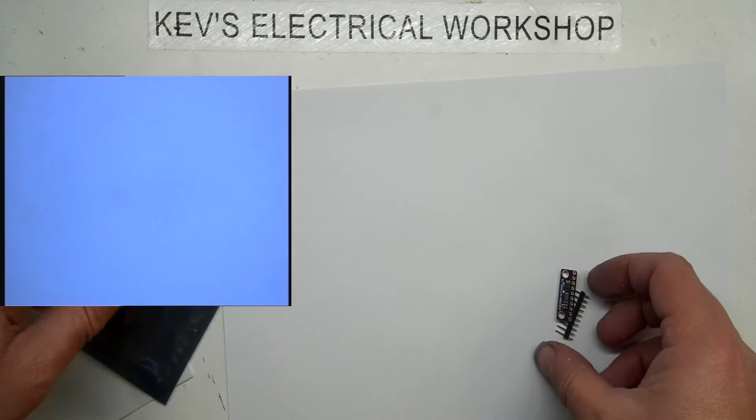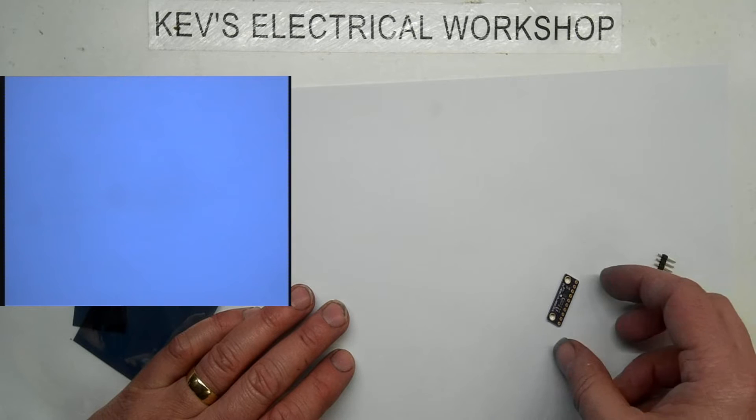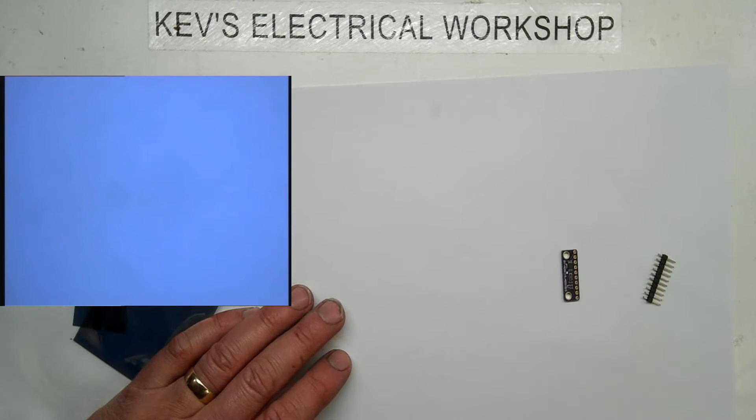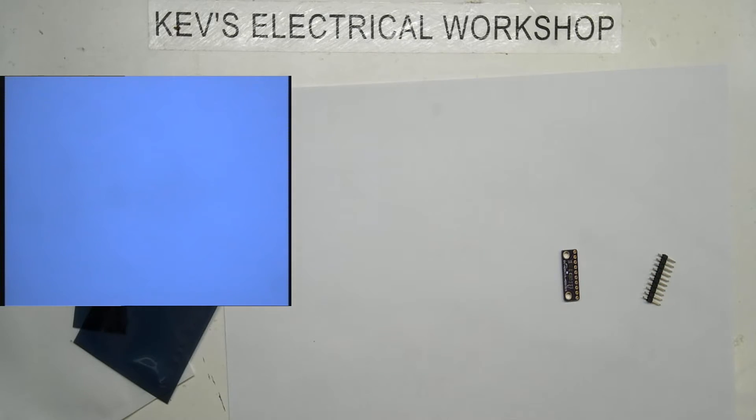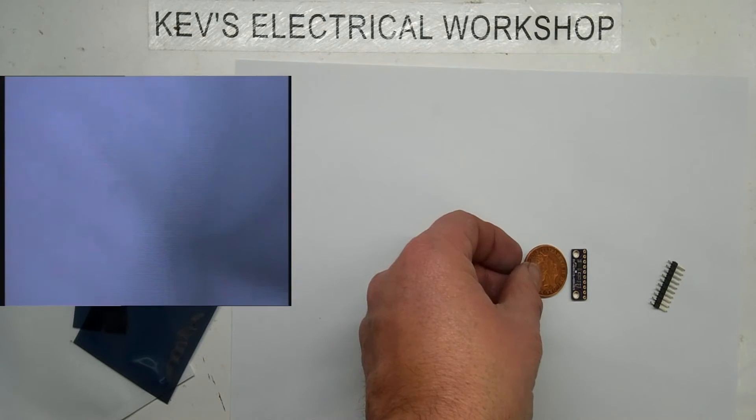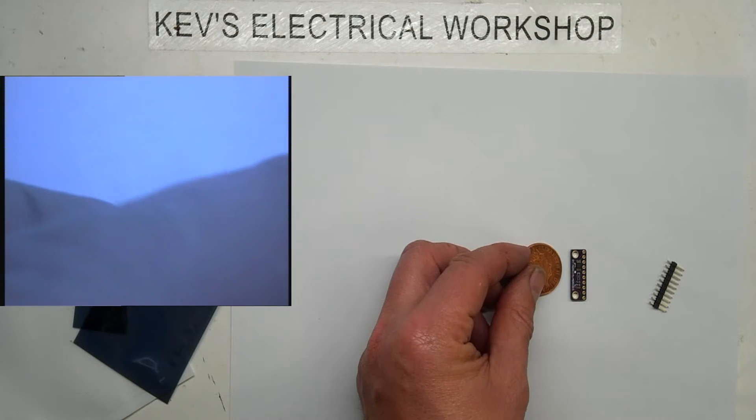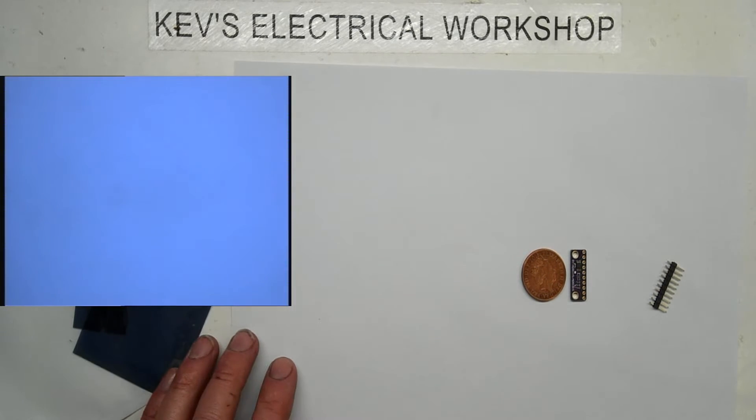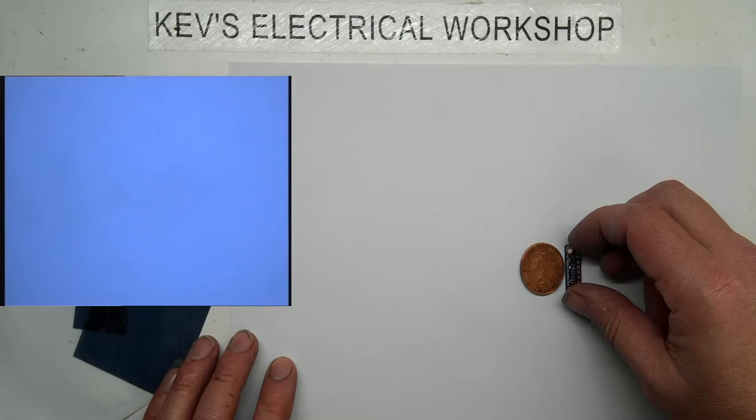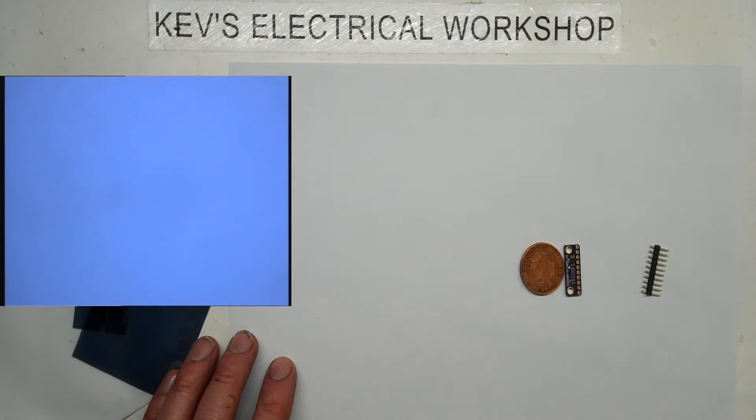Immediately you can see we've got a header which is not soldered, and this little board. To give you some idea of the size of it, this is a UK two pence piece, so it is quite a small module.